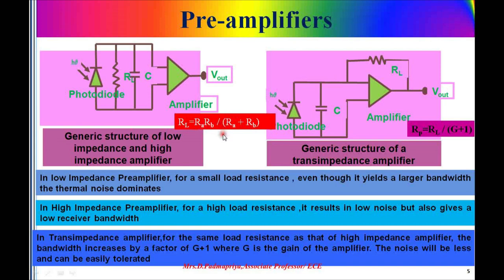A small load resistance gives a larger bandwidth, but the thermal noise is inversely proportional to the load resistance, so the value of R_L should be as large as possible to minimize the thermal noise. By increasing the value of R_b, the high impedance amplifier design can be achieved. For a high impedance front end amplifier, the high resistance results in low noise but also gives a low receiver bandwidth. Although equalizers can be implemented to increase the bandwidth, if the bandwidth is very much less than the bit rate, such a front end amplifier cannot be used. To overcome this, the trans-impedance amplifier design came into existence.